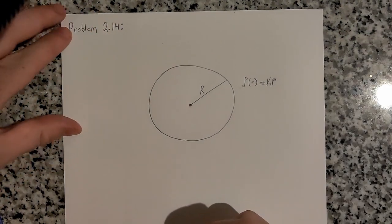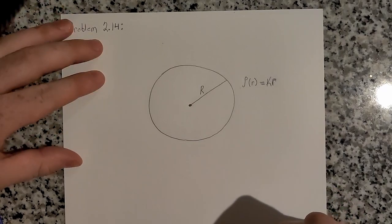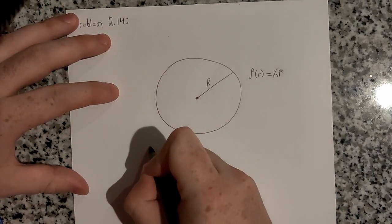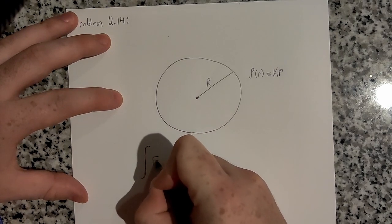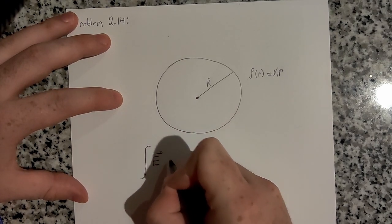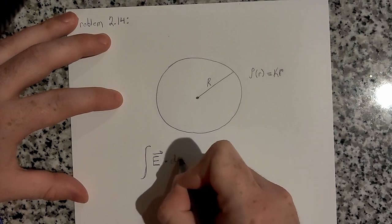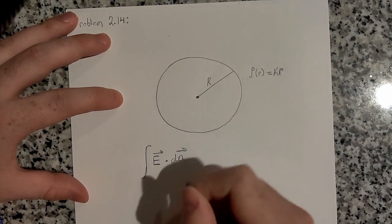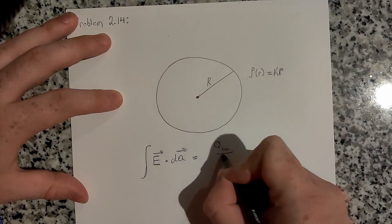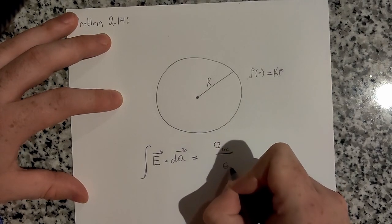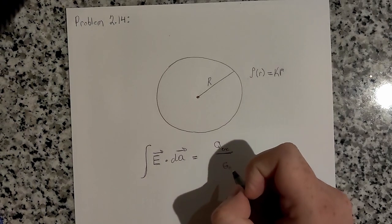Okay, so how do we solve this? Well, of course we have Gauss's Law. So let's just write down Gauss's Law. We have that the flux of the electric field through our Gaussian surface is equal to the charge enclosed divided by epsilon naught.